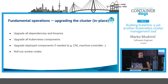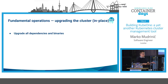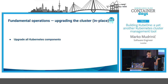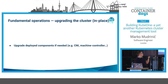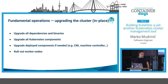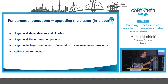The upgrade steps are: upgrade all dependencies and binaries using your package manager depending on the OS, upgrading all Kubernetes components. Then run `kubeadm upgrade` with configuration files similar to those used for installation. Then deploy the components like CNI, machine controller, or whatever was deployed when creating the cluster, and finally roll out the working nodes. In most cases you can reuse the steps from installation, just substituting upgrade commands for kubeadm.